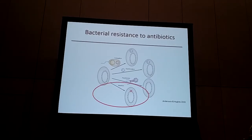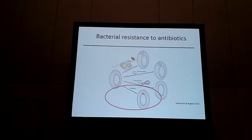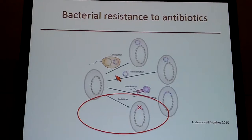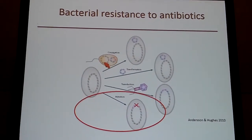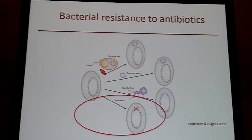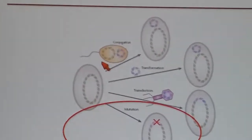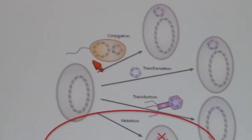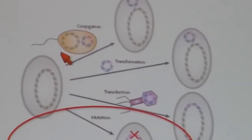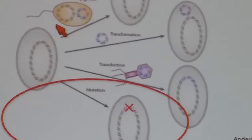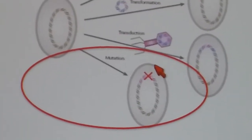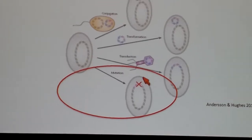As a quick primer, bacteria can become resistant to antibiotics through four main mechanisms. The top three involve transfer of DNA from the environment: conjugation, where they gain resistance from another bacterium of the same or different species; transformation, which is uptake of naked DNA from the environment; and transduction, from things like bacteriophages. I'm going to focus on de novo mutations that confer resistance.